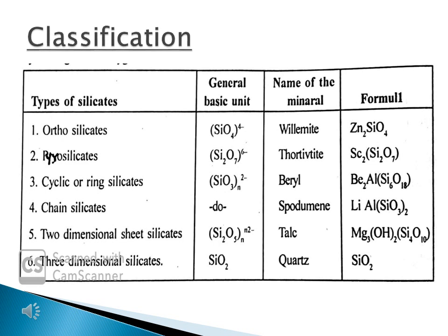There are 6 types of silicates. The first one is orthosilicates, with general basic unit SiO4⁴⁻. The mineral is Wilhelmite with formula Zn2SiO4. The second one is pyrosilicates, with general basic unit Si2O7⁶⁻. The mineral is thortveitite with formula Sc2Si2O7. The third one is cyclic or ring silicates, with general basic unit (SiO3)ₙ²ⁿ⁻. The mineral is Beryl with formula Be3Al2Si6O18.